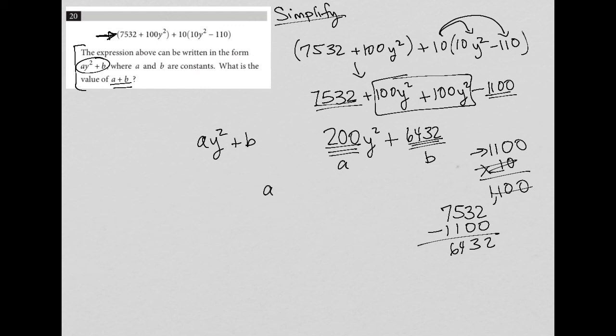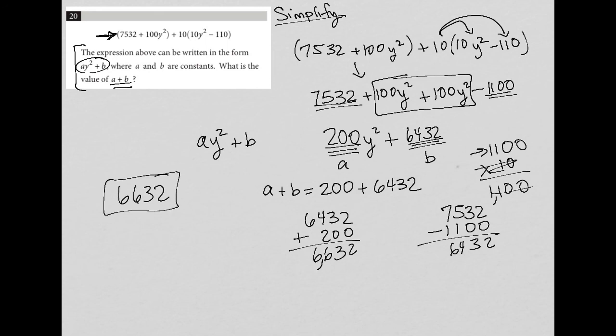So I'm going to say a + b equals 200 + 6432. I'm just going to write that vertically here so we can clearly see how to add it up. So 2 plus 0, 3 plus 0, 4 plus 2, and 6 plus nothing. So that's 6,632. So your answer will be 6632.